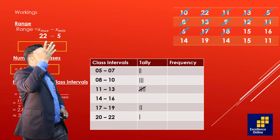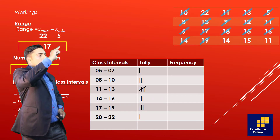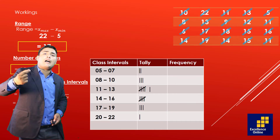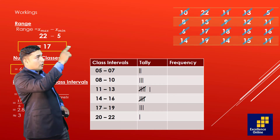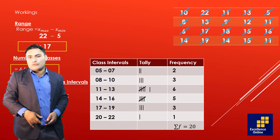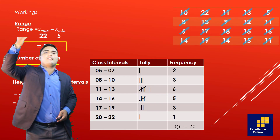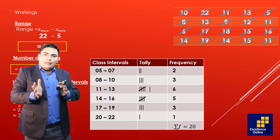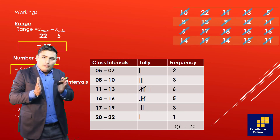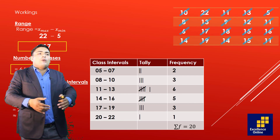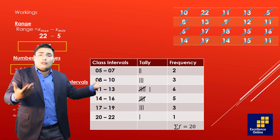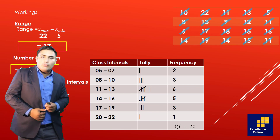इसी तरह تمام values enter करते जाएंगے: 14, 19, 14, 15, 11 — جب تمام values enter ہو جائیں تو tally کے column میں بنائے bars count کر کے frequency column میں لکھ دیں۔ Frequency کا sum ہمیشہ number of observations کے برابر آنا چاہیے — اس سوال میں 20 values تھیں تو frequency کا sum بھی 20 آیا۔ اس lecture کو یہاں end کرتے ہیں۔ Next lecture میں relative frequency، cumulative frequency اور midpoint سکھائیں گے — بہت شکریہ، اللہ حافظ۔